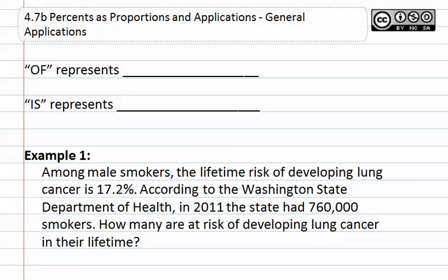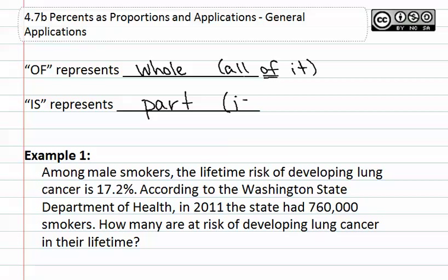Remember that 'of' is going to represent the whole and 'is' is going to represent the part. Sometimes it's easier to remember if you have some sort of a saying. Remember the saying 'all of it' to emphasize that 'of' is the whole. The other one is the part, and you can remember it as 'it is interesting,' because it is the part that you are usually interested in.